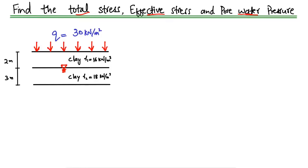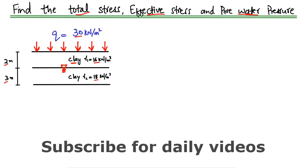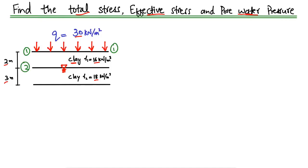We are given a soil sample of two layers. One is clay with a unit weight of 16 kilonewton per cubic meter, and the other clay has a unit weight of 18 kilonewton per cubic meter. They have depths of 2 meters and 3 meters respectively, and there is a load of 30 kilonewton per square meter acting on this soil sample — possibly a live load. We have to find out the total stress at each point: 1.1, 2.2, and 3.3. Keep in mind that the water table is at point 2.2, so pore water pressure will only develop at or below point 2.2.